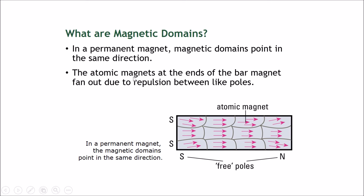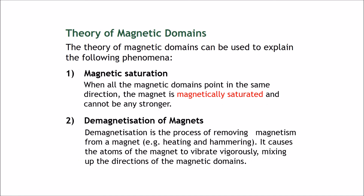The atomic magnets at the ends of the bar magnet will fan out a little bit due to repulsion between like poles, but it's still all generally in the same direction. In a permanent magnet, the magnetic domains point in the same direction — the ends of the arrows are the south poles and the arrowhead side is the north pole.